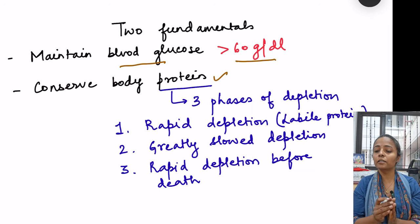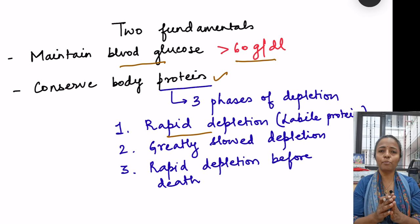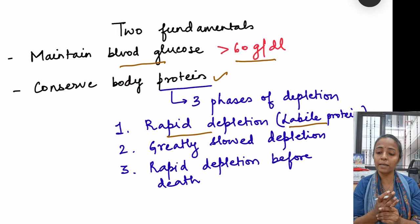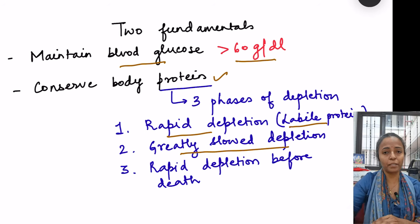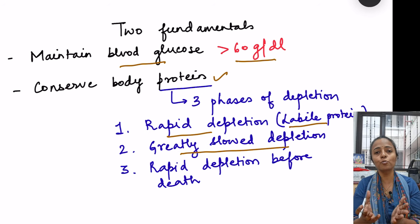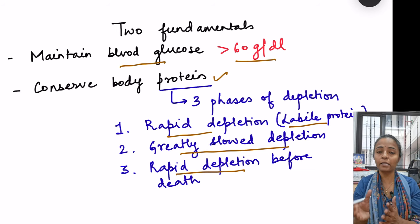In different phases there are three different phases of protein depletion. First is the rapid depletion phase, where easily broken-down proteins — such as proteins of intestinal secretions, the labile proteins — are broken down. Then there is a greatly slowed depletion phase where proteins are conserved. Finally, when all fat storage is used up, there is again rapid depletion of protein stores — including structural proteins — occurring shortly before death.